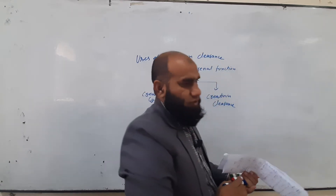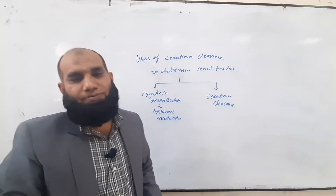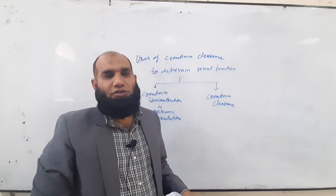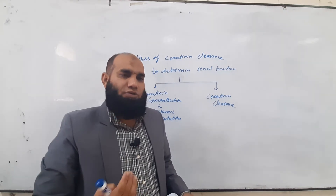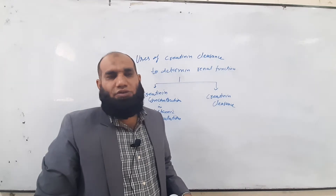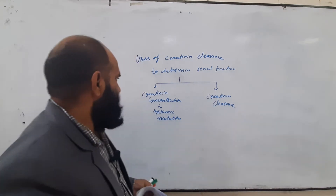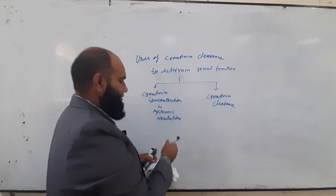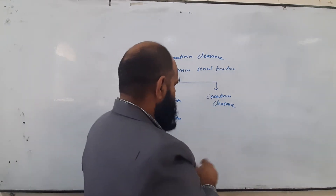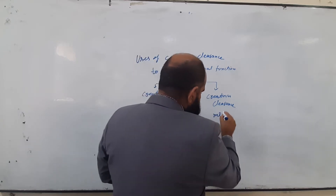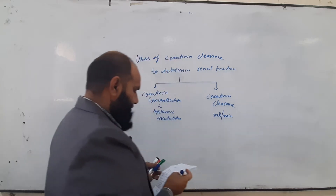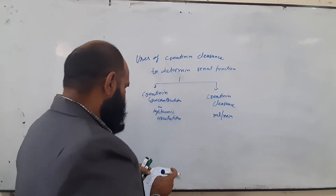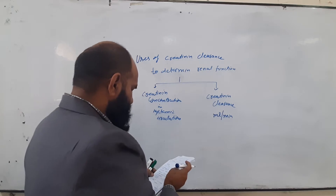Clearance means how much plasma is getting free from creatinine in a unit time — irreversibly. This is creatinine clearance and its units are ml per minute. In the case of creatinine concentration in the systemic circulation, the units are milligram per deciliter, milligram percent, or milligram per 100 ml.